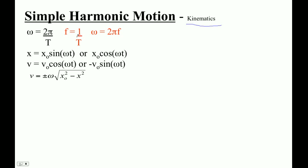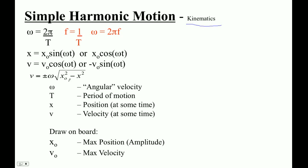These are the formulas that they give you. The ones in red are not in the data packet. This omega here is the angular velocity. What we do is we pretend that the simple harmonic oscillator is rotating.